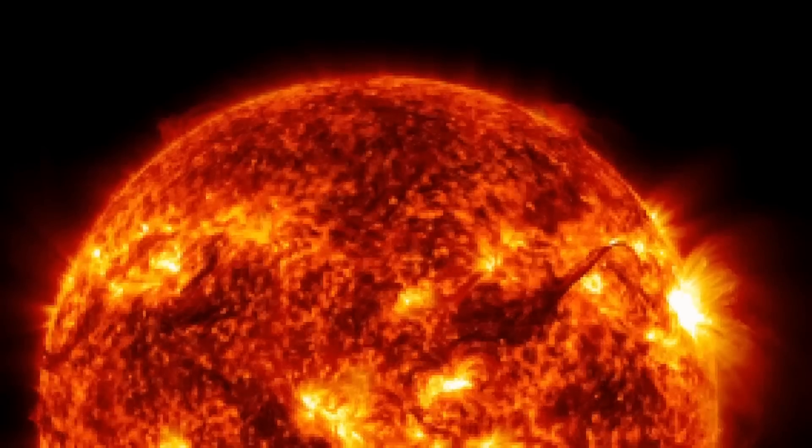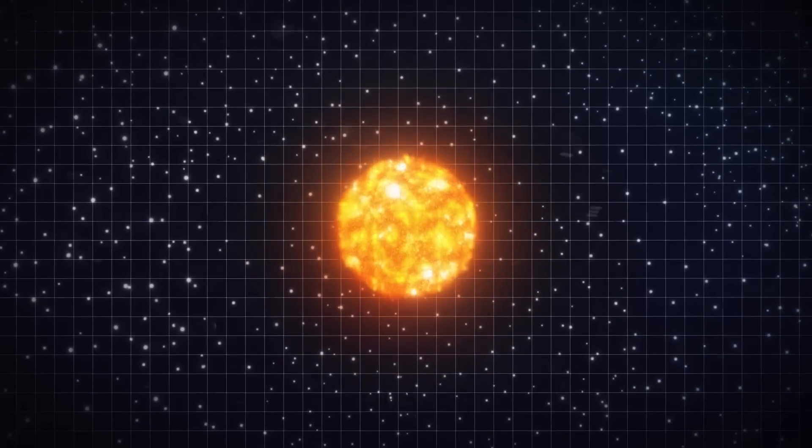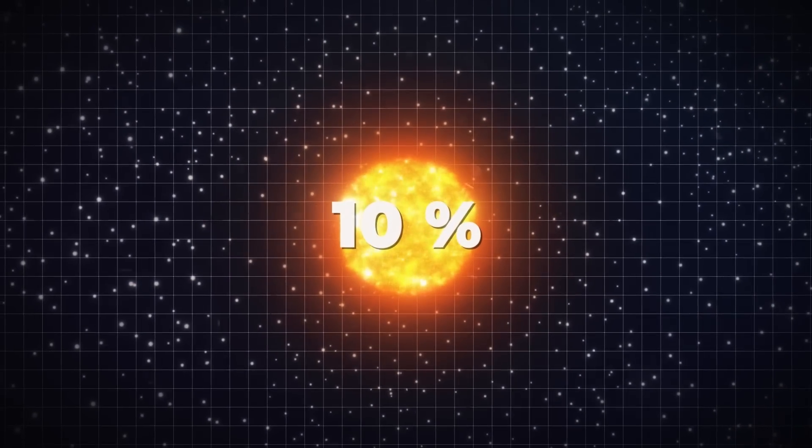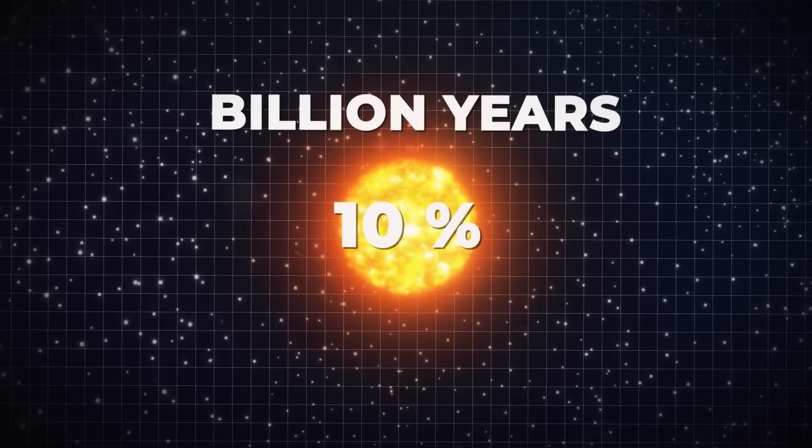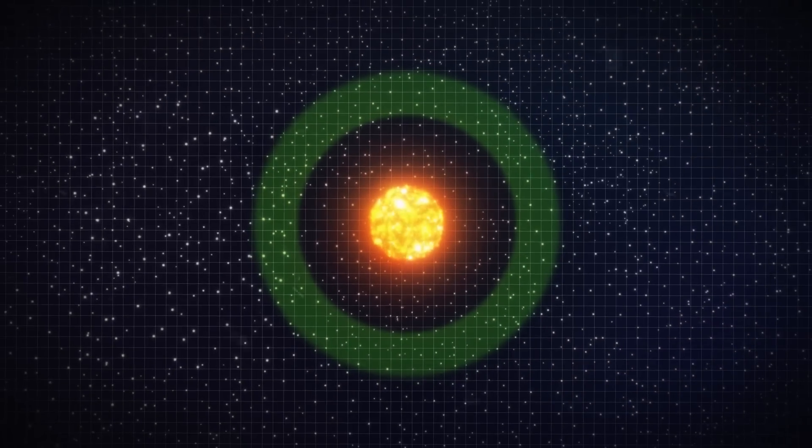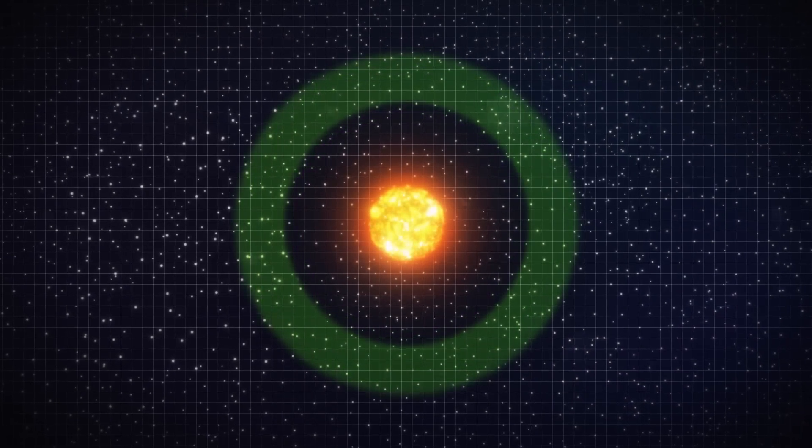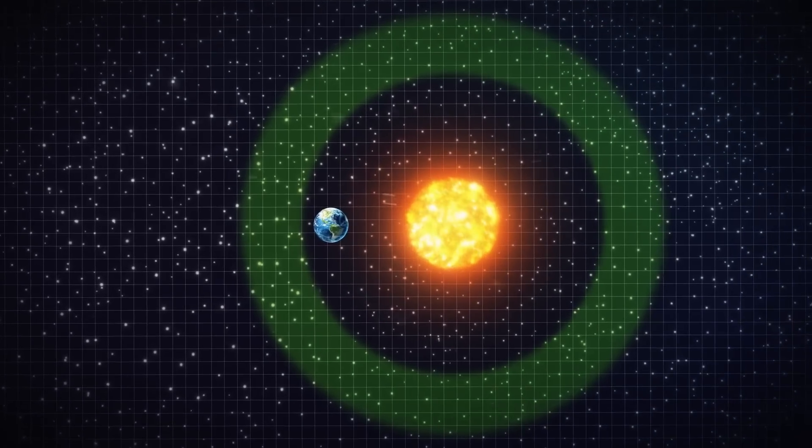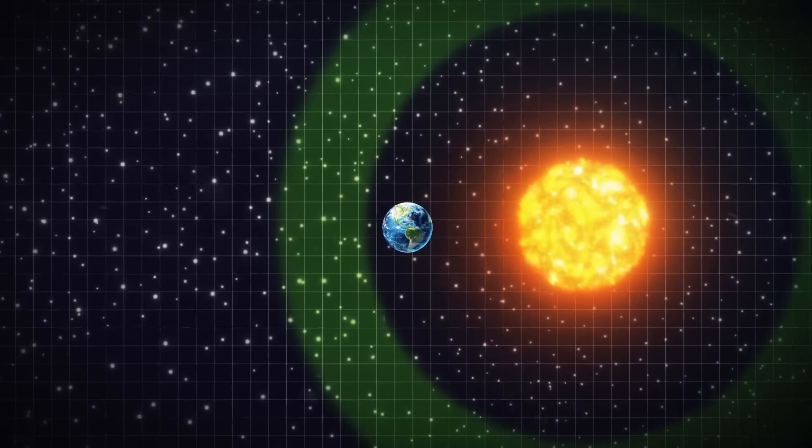The bad news though? The brightness of the Sun is actually growing at a rate of roughly 10% every billion years as it burns hydrogen. The habitable zone in our solar system might alter with a 10% increase in light, which would have disastrous effects on our planet.